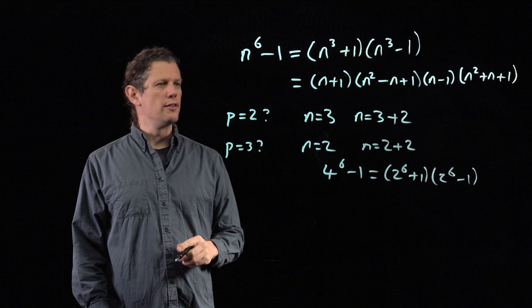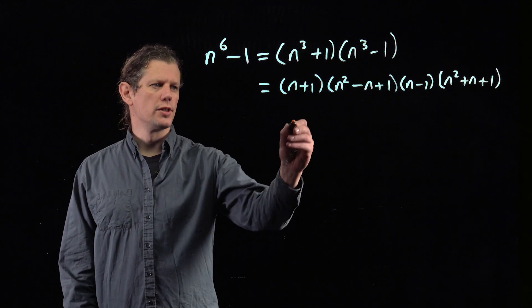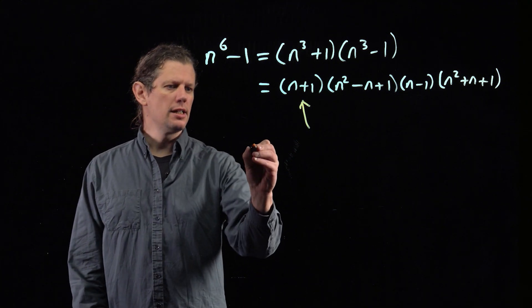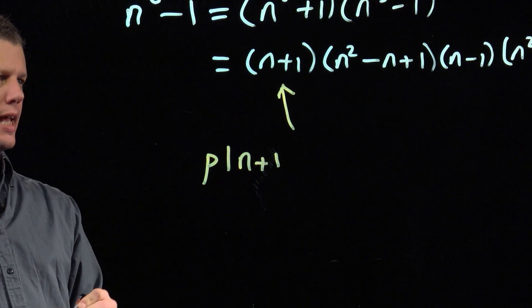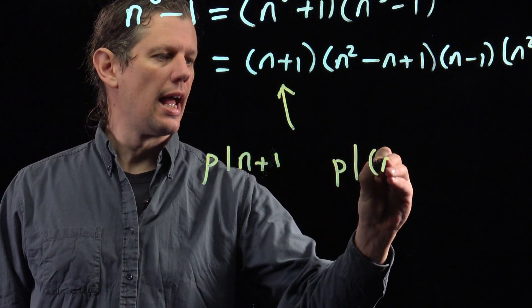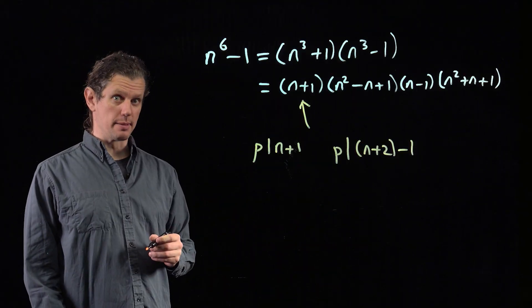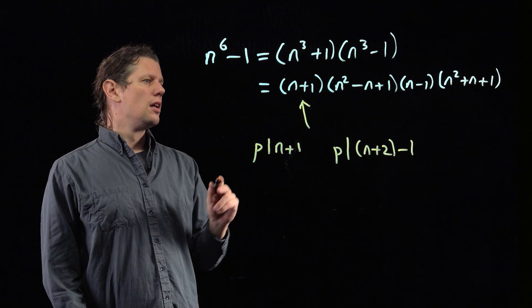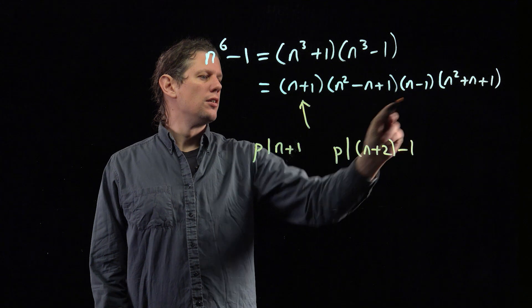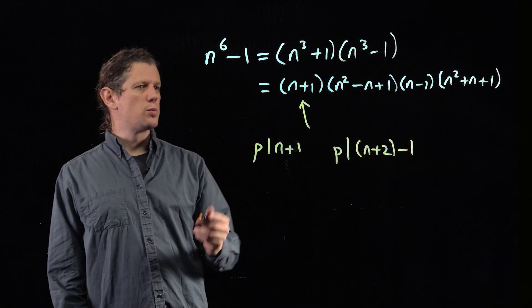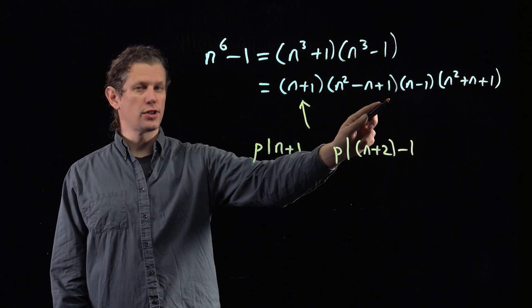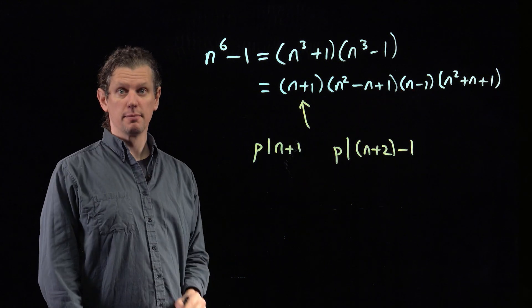Now I'll go through the four factors in turn as promised. What if p divides n⁶ - 1 because it divides (n + 1)? Well, if p divides (n + 1), then p also divides (n + 2) - 1 because that's the same thing. That means if we've got a prime that divides this factor, then it will divide this factor for n + 2. So if p divides n⁶ - 1 because it divides (n + 1), then it will divide (n + 2)⁶ - 1 because it will divide that factor for n + 2.